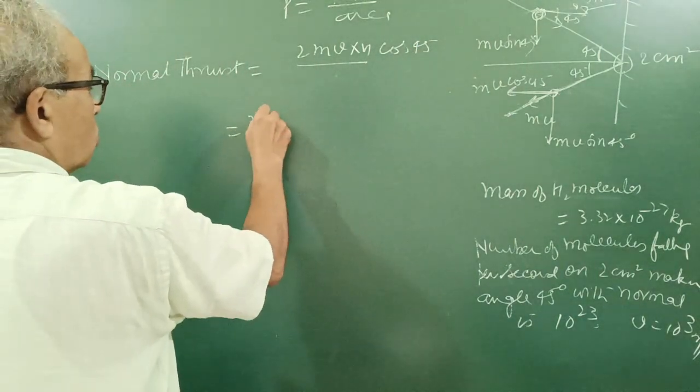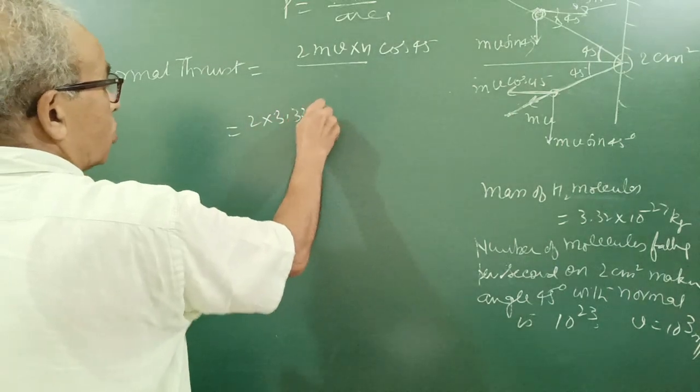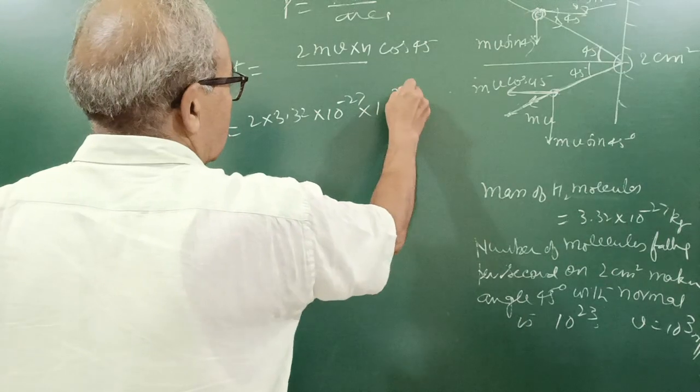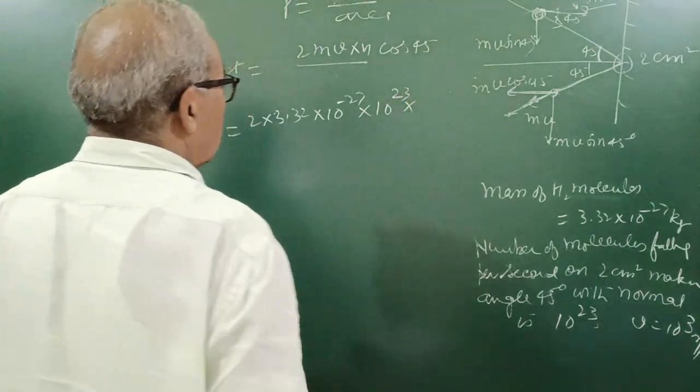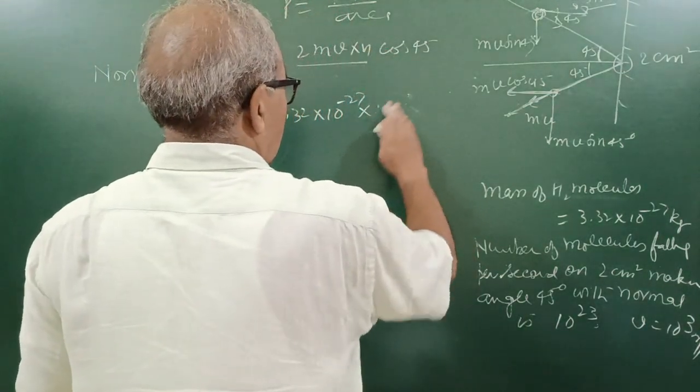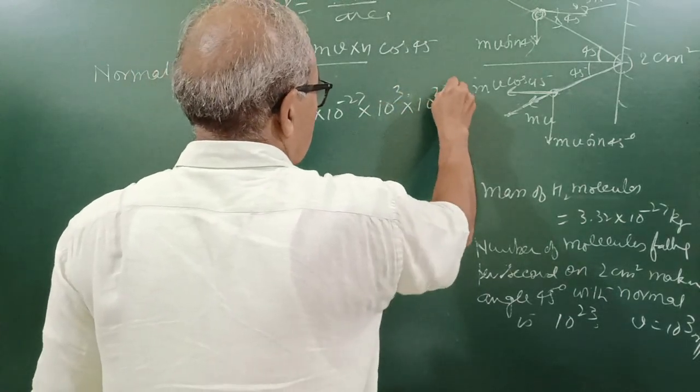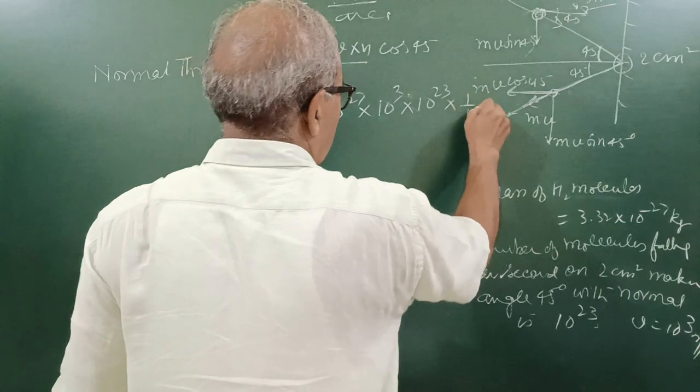So it is 2 into 3.32 times 10 to the power minus 27, 10 to the power 23, times velocity 10 to the power 3 into number 10 to the power 23, cos 45, 1 by root 2.